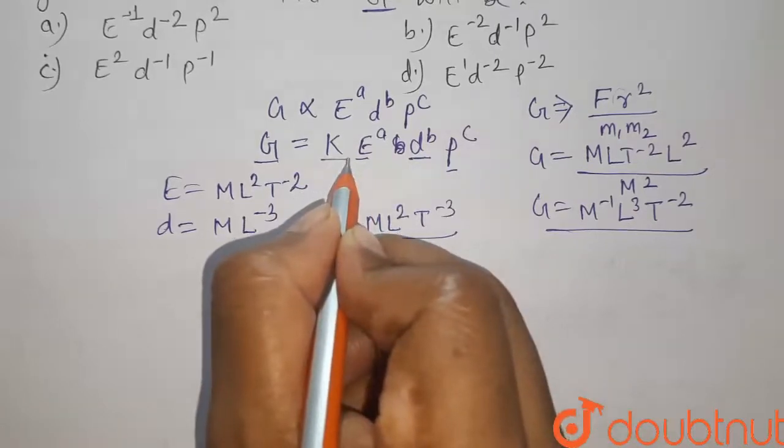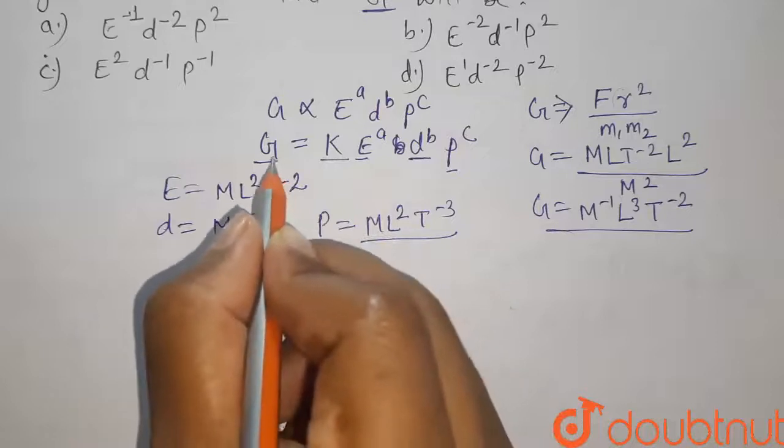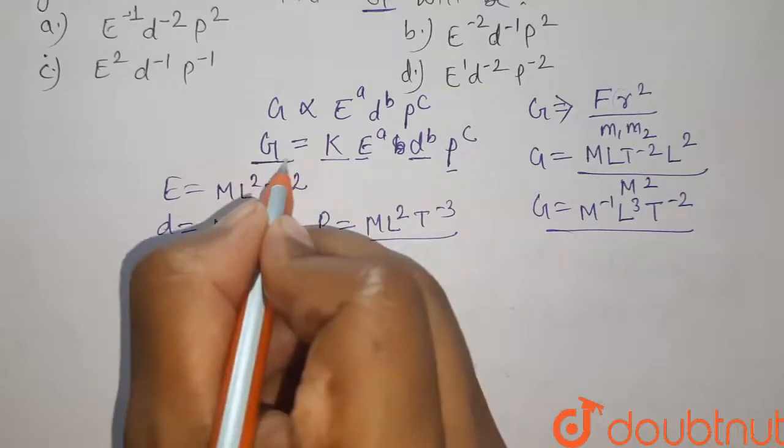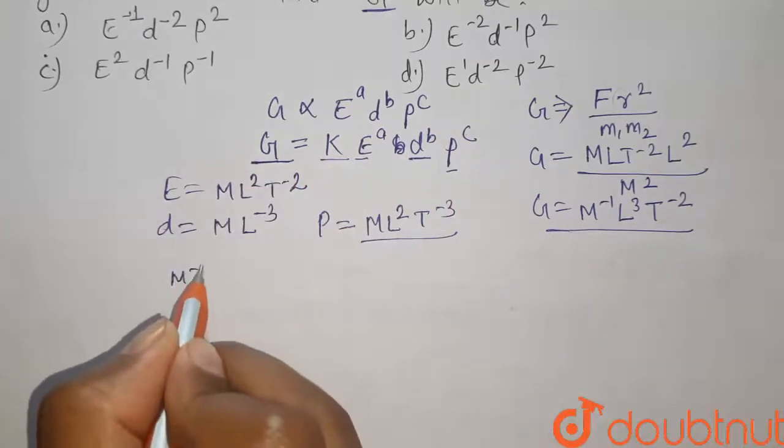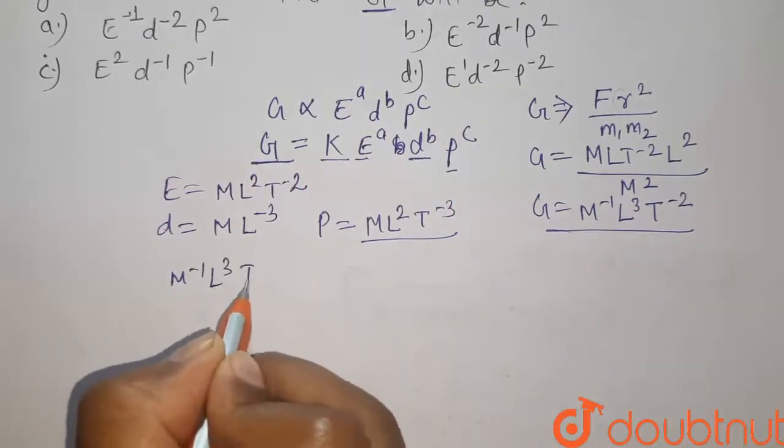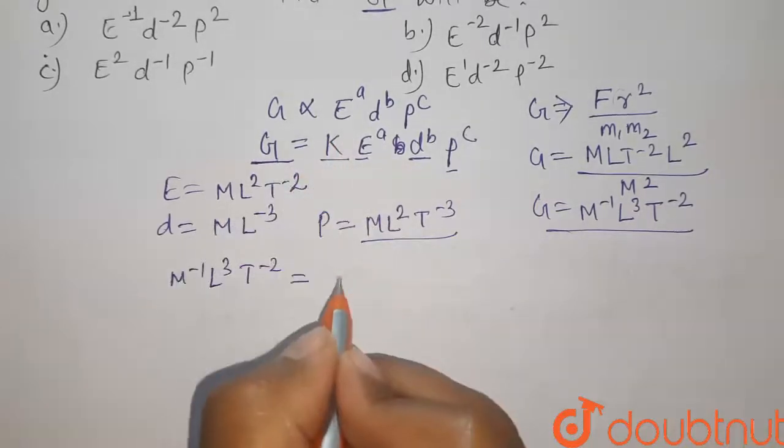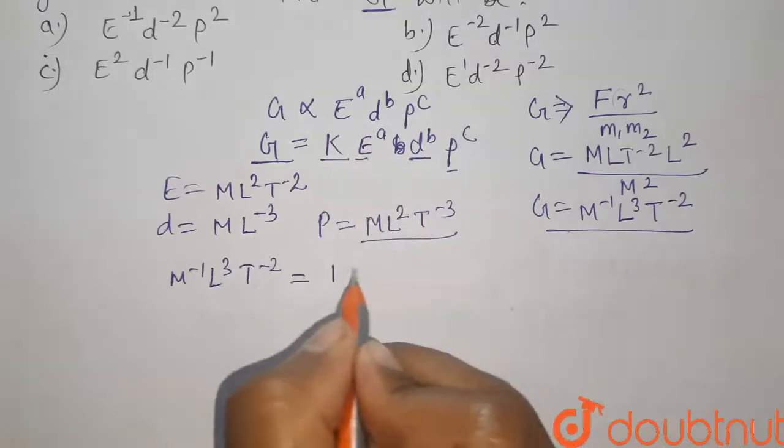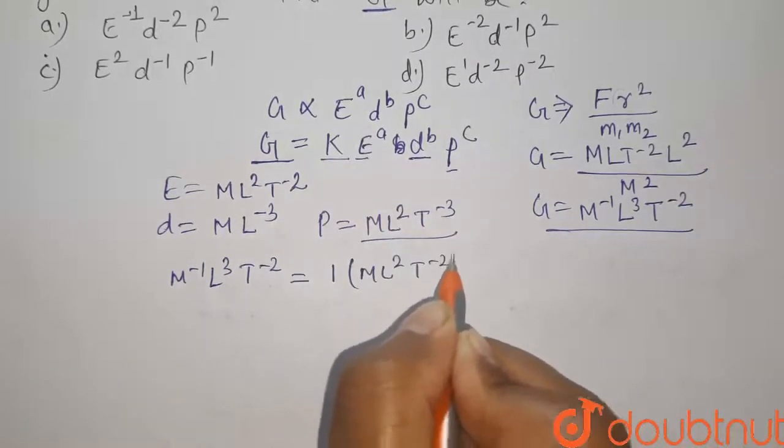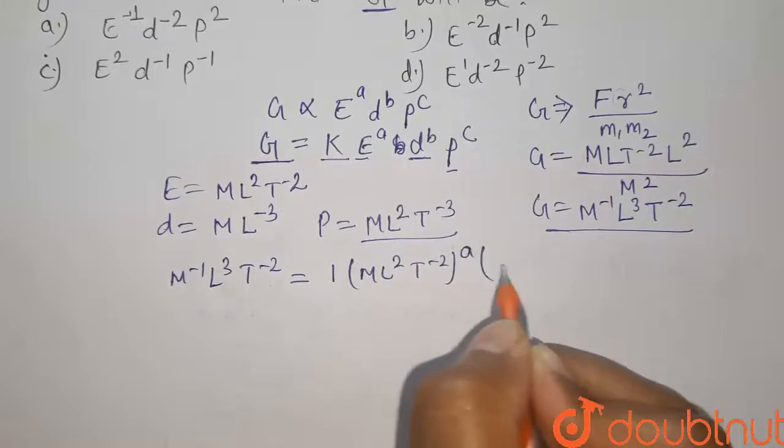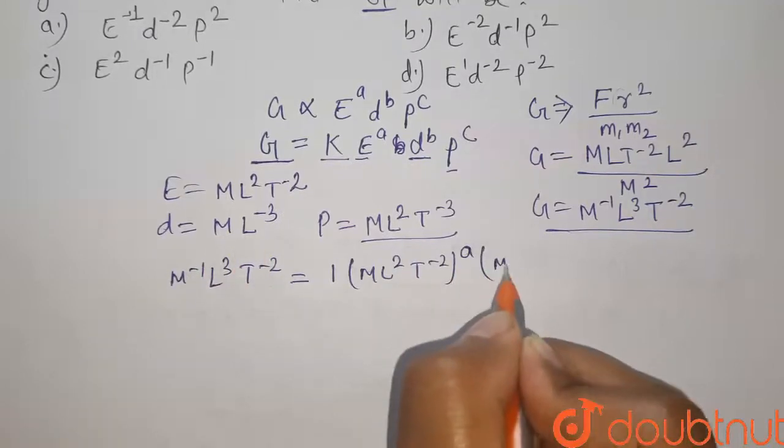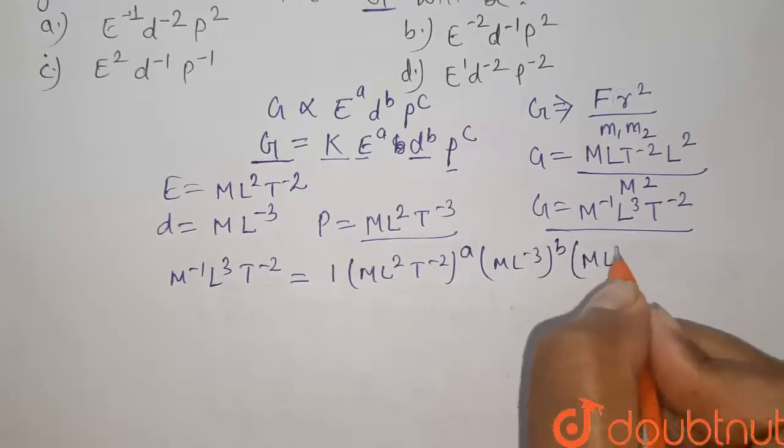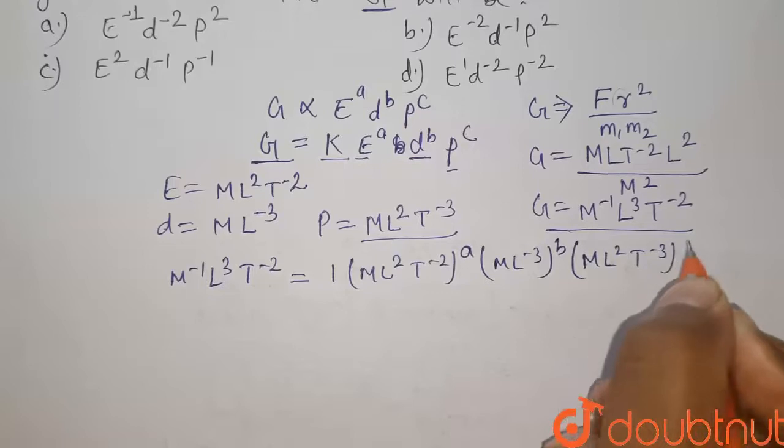Now we will compare left hand side and right hand side dimensionally. So on left hand side, the dimension of G is M minus 1 L3 T minus 2 equals to K have the dimension of 1 because it is dimensionless. Energy here, ML2 T minus 2 to the power A, D has the dimension ML minus 3 to the power B, and power have the dimension ML2 T minus 3 to the power C.